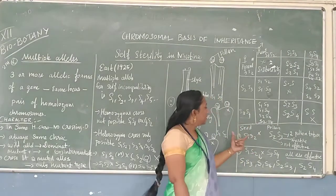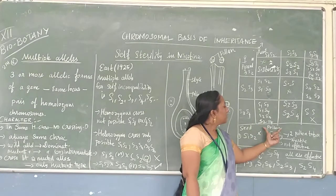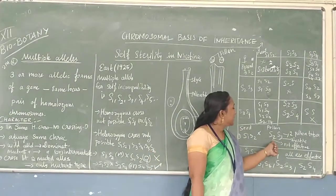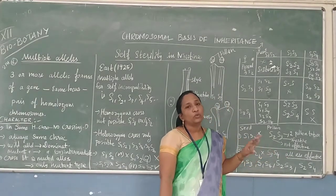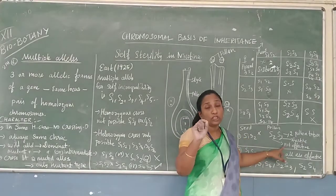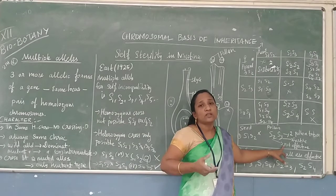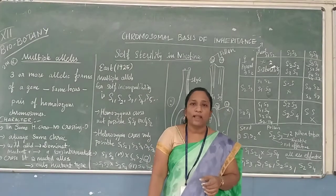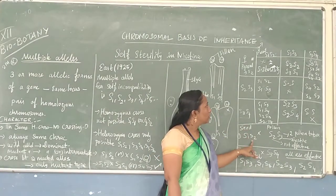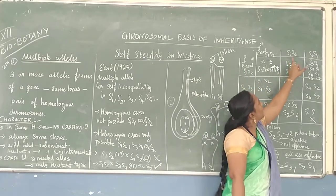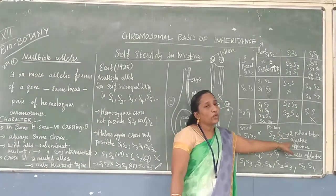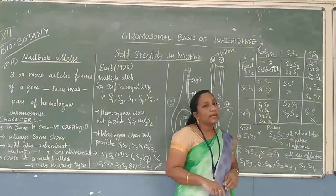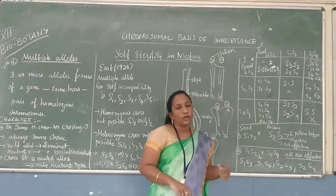One important thing to know: when S1S2 stigma is crossed with S2S3 pollen, two types of pollen tubes are possible. But the pollen tube formed by S2 is not effective — it cannot form a proper pollen tube and does not have the capacity to fertilize. However, S3 can produce an effective pollen tube which is used for the fertility of the plant. So S3 contributes to fertilization while S2 does not.